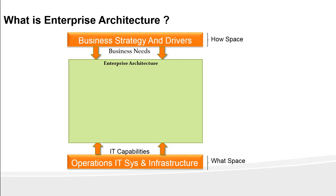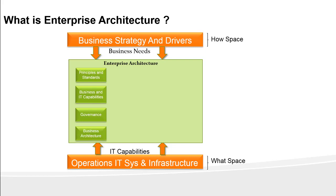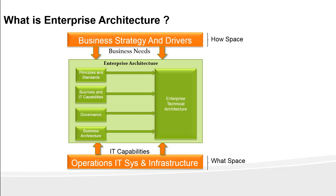There are many components within enterprise architecture itself. Enterprise architecture has to do less with technology and more with methodology. Some components include architecture principles and standards across the enterprise, business and IT capabilities model, enterprise architecture governance program or architecture review board, business architecture, and enterprise technology architecture — where all the technology artifacts reside, like future states of architecture, architecture models, transition plans, and component model diagrams. Enterprise technology architecture is not enterprise architecture — that's where most confusion arises. Technology is just a part of enterprise architecture.